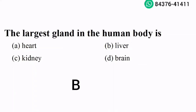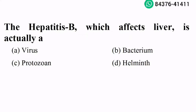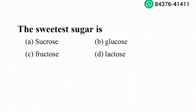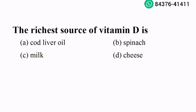Option B is the right answer. Hepatitis B, which affects the liver, is actually a virus. Option A is the right answer. The sweetest sugar is fructose. Option C is the right answer. The richest source of vitamin D is cod liver oil. Option A is the right answer.